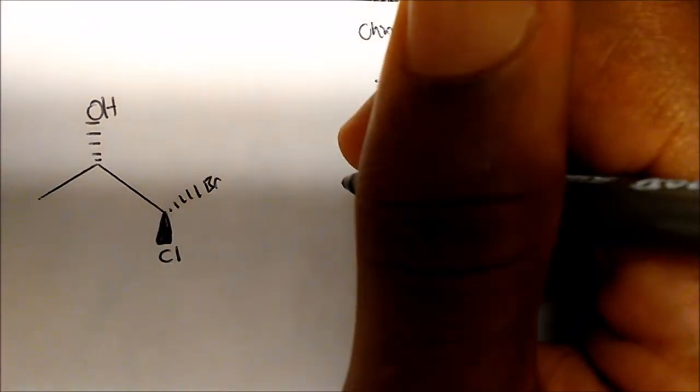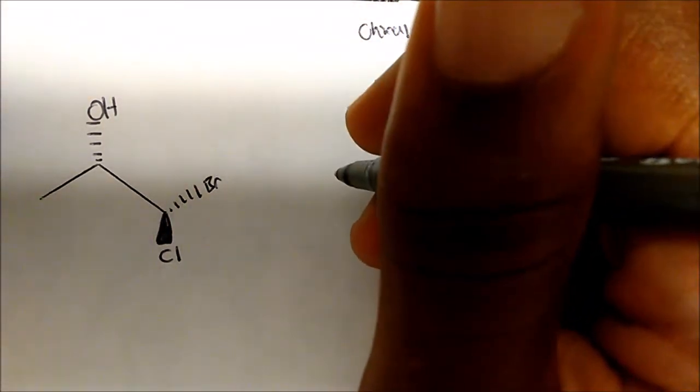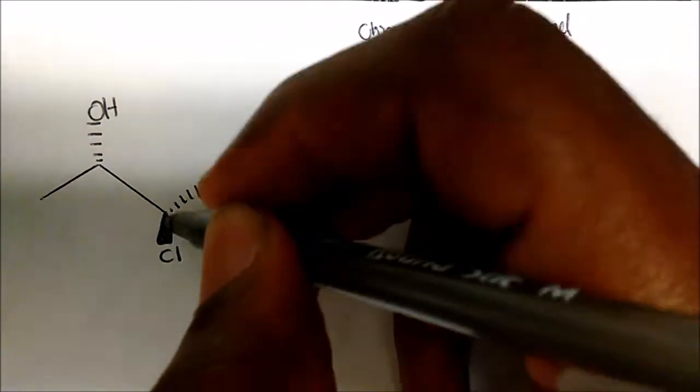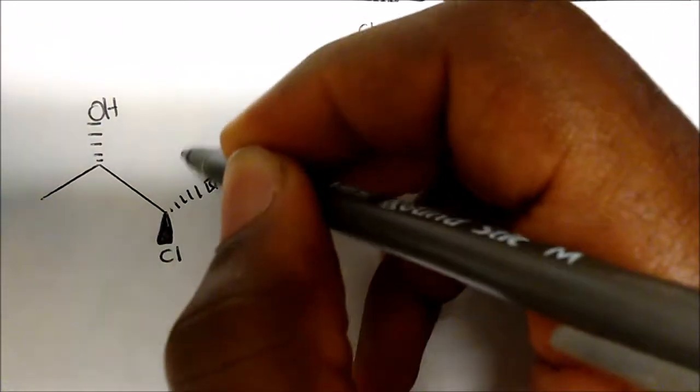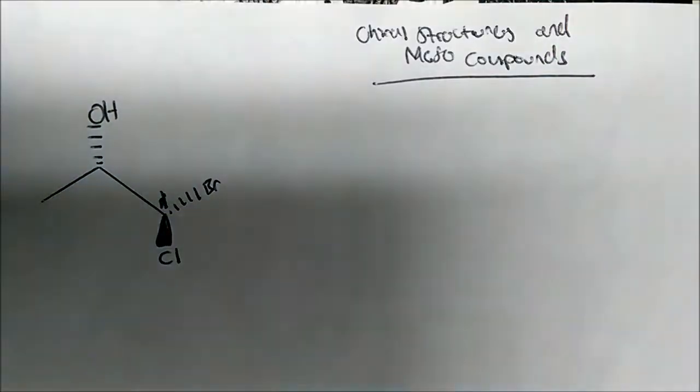A chiral center, or chiral carbon, is usually bonded to four different substituents. So here we have a bromine, a chlorine, a hydrogen that's in space, and an R group — so this is definitely chiral. And here we have an OH group with a methyl group, a hydrogen, and this R group — so this is definitely chiral too.